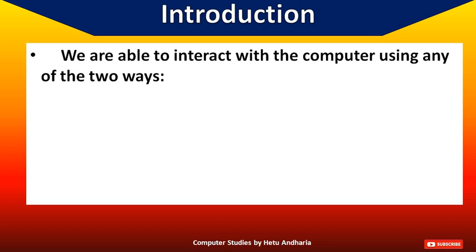Just try to imagine — right now you are reading here, the introduction background is blue, and then there is a white color box inside which something is typed in black and white. You can understand this. So, there should be something that will convert all the binary 0s and 1s into something you can see, and allow the user to interact with the computer. We also can't type everything in 0s and 1s.